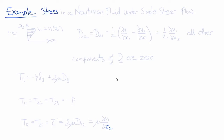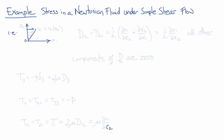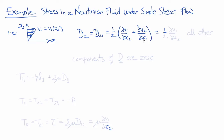Now let's look at an example of stress in an incompressible Newtonian viscous fluid under simple shear flow. In simple shear, we have velocity in the x1 direction varying in magnitude as a function of x2, so v1 is equal to v1 of x2 and does not depend on x1 or x3, and v2 and v3 are zero. The only non-zero components of the rate of deformation tensor are D_12 and D_21, which are equal to one-half times del v1 del x2 plus del v2 del x1. Since v2 is zero, this leaves one-half of del v1 del x2, with all other components of the rate of deformation tensor being zero.